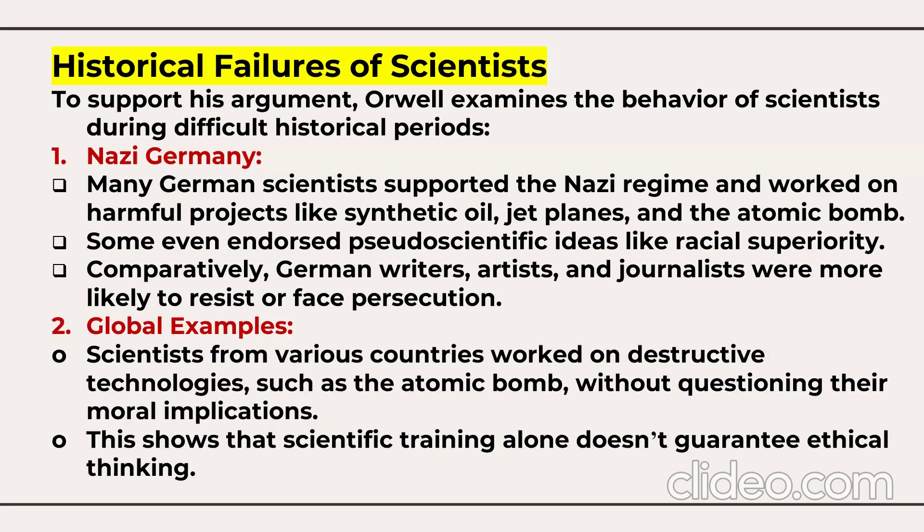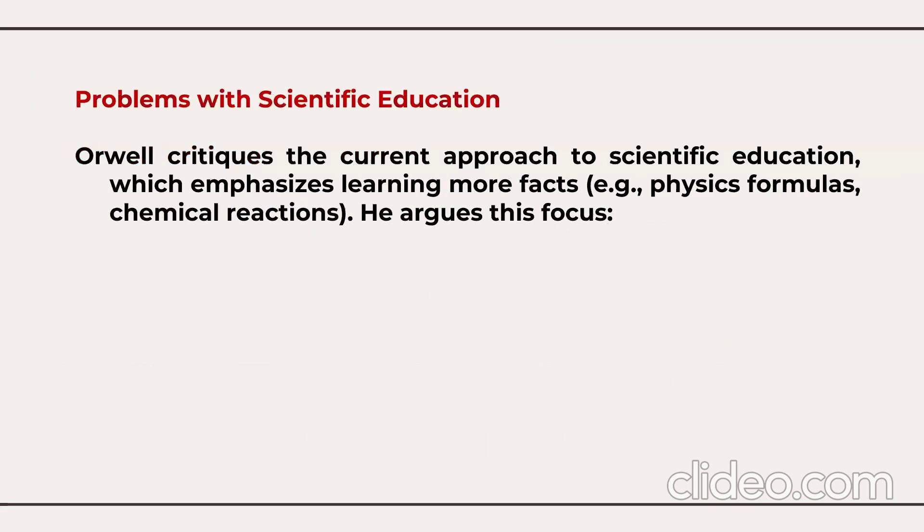Global examples also show the historical failures of scientists. Scientists from many countries worked on destructive technologies — for example, the atomic bomb — without questioning the moral implications. This shows that scientific training alone does not guarantee ethical thinking. These are the historical failures of scientists from Nazi Germany and in global examples.